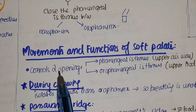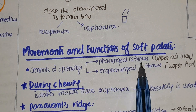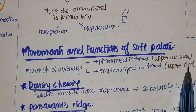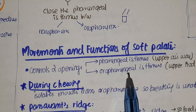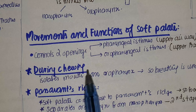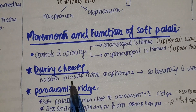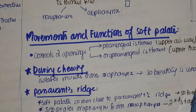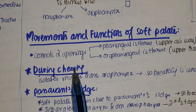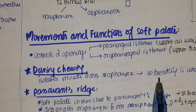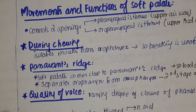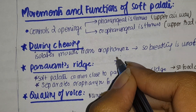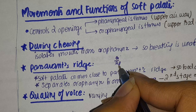Now let's discuss the major functions and movements of the soft palate. The soft palate controls two openings: the pharyngeal isthmus, which is the upper airway, and the oropharyngeal isthmus, which is the upper food way. During chewing, the soft palate isolates the mouth from the oropharynx so that breathing is unaffected. Passavant's ridge causes the soft palate to close the opening between the nasopharynx and oropharynx so food does not enter from the mouth to the nose.